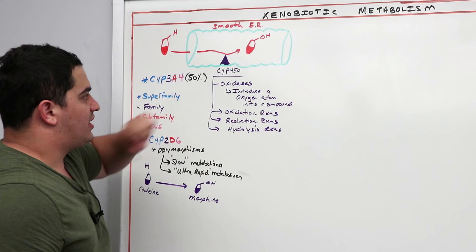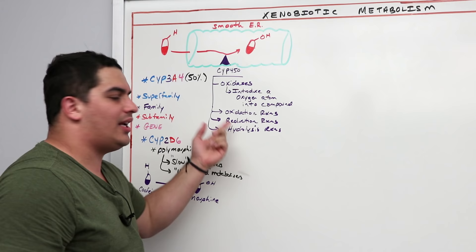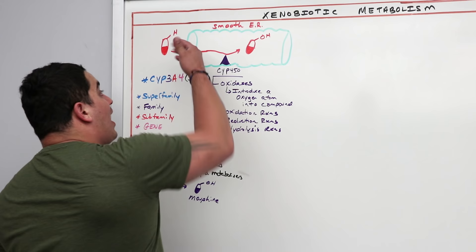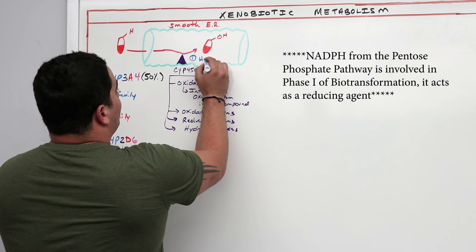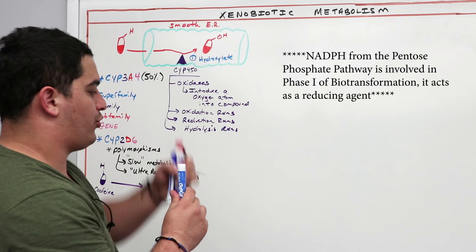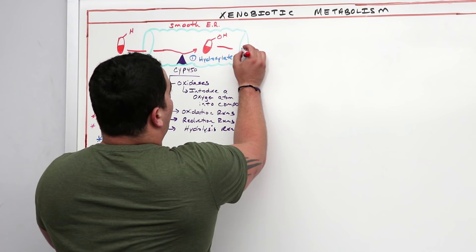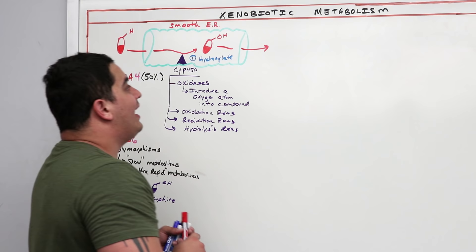We now have a good understanding of what happens with the cytochrome P450 complex: we take the drug and insert oxygen into it through oxidation, reduction, or hydrolysis reactions, primarily trying to hydroxylate it. The goal of this first step is to hydroxylate the drug and produce an OH group, making it slightly more polar — but not polar enough on its own.